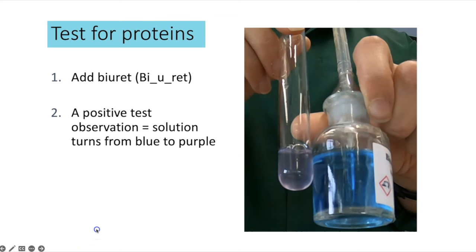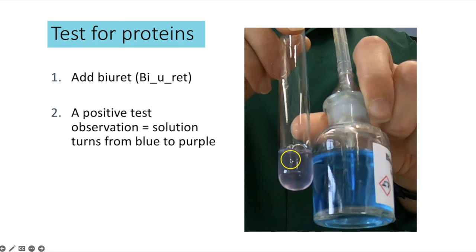To test for protein, add biuret reagent — spelled B-I-U-R-E-T, not to be confused with burette. Biuret is pale blue. Add it to your sample — no heating required — and if protein is present it turns purple/lilac.